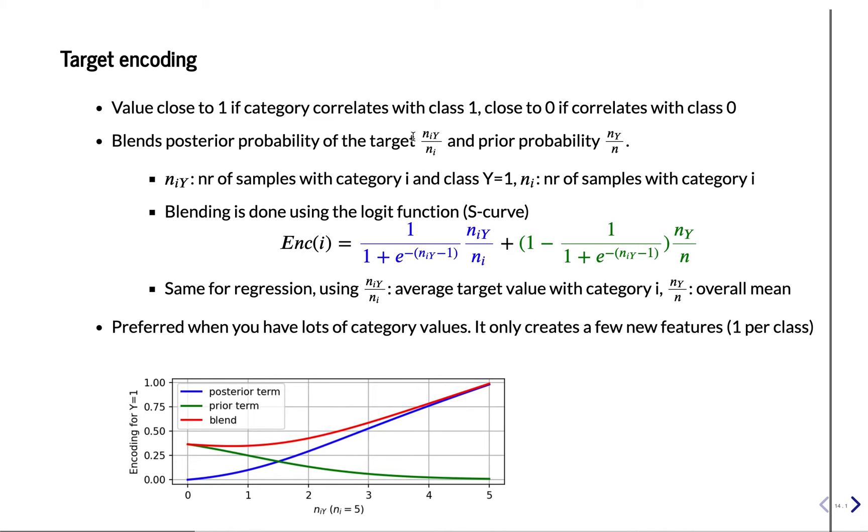But one problem with that is that, say that you have a category, and there's only like one value. Because if there's only this category i, there's only one row of category, and this happens to be associated with class i, one.